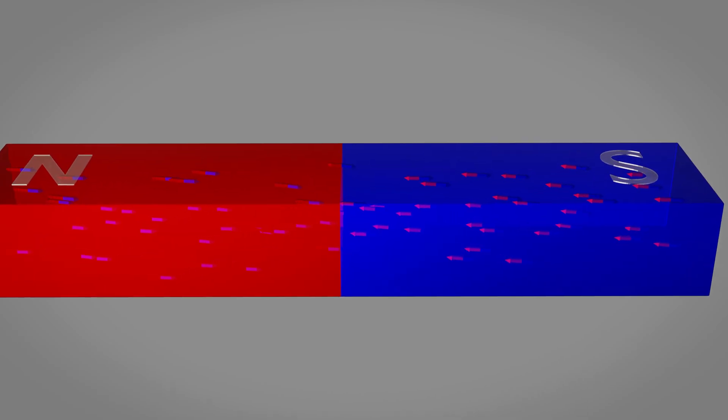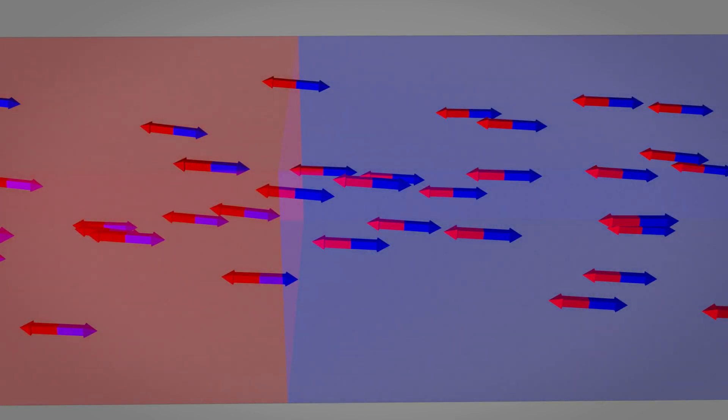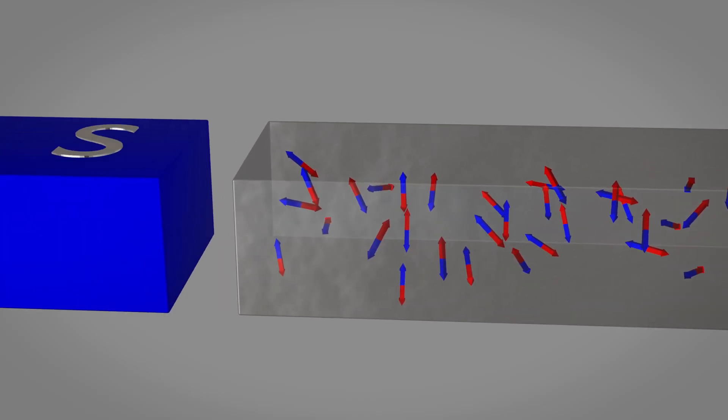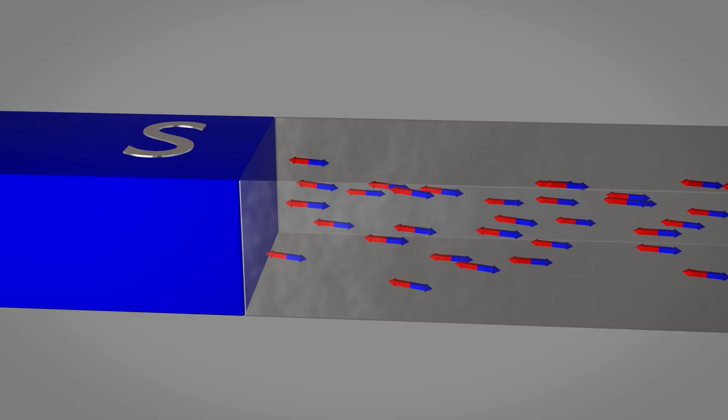Within ferromagnetic materials like iron, nickel, and cobalt, tiny regions called magnetic domains exist. Think of these domains as microscopic neighborhoods where atoms align their magnetic properties in the same direction. In an unmagnetized piece of iron, these domains point randomly in all directions, canceling each other out. However, when exposed to an external magnetic field, these domains begin to align, creating the familiar magnetic properties we observe.